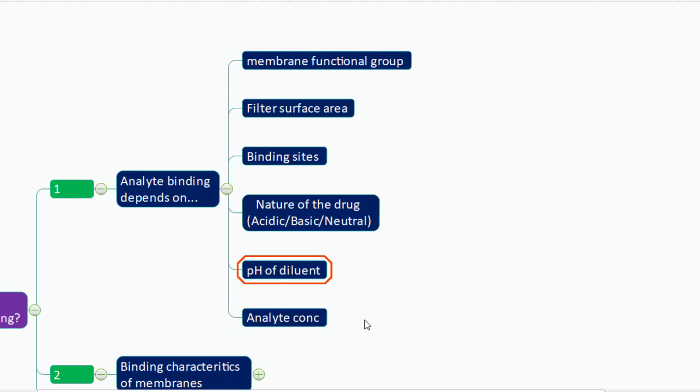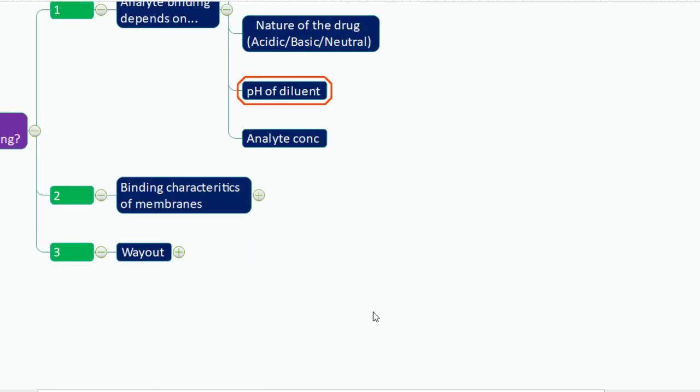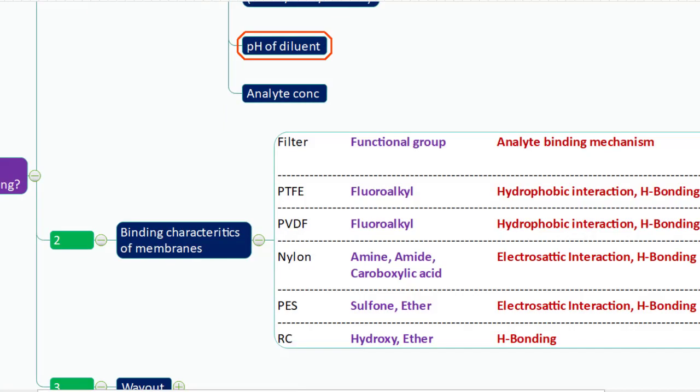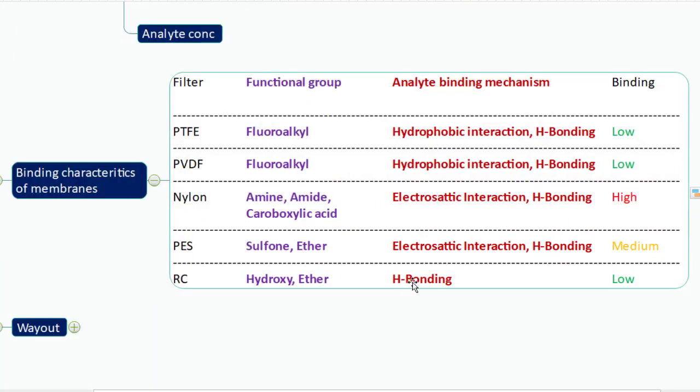Analyte concentration is another important factor. Lower analyte concentration requires higher filter saturation volume, whereas higher analyte concentration results in minimum binding. Now, what are the binding characteristics of the five membrane filters? This table provides general guidelines, but you need to consider other impacting parameters as well. For PTFE — functional group: fluoroalkyl — analyte binding generally occurs via hydrophobic interaction and hydrogen bonding.